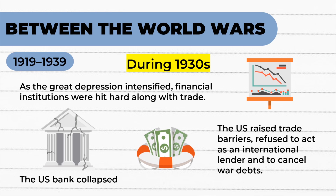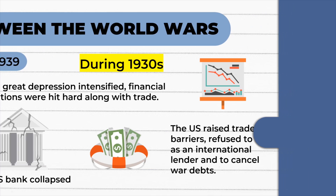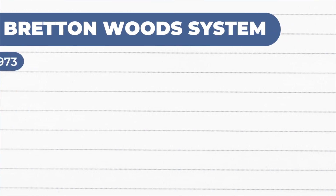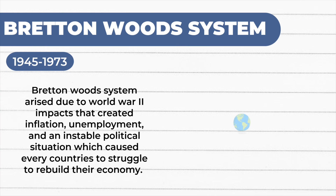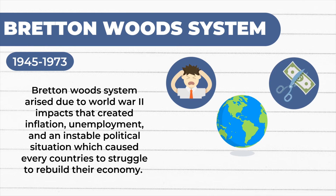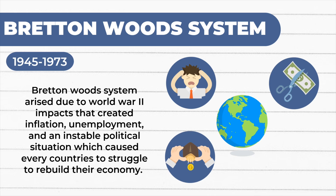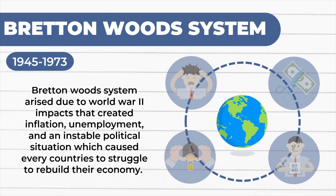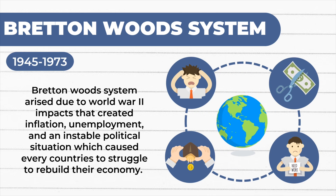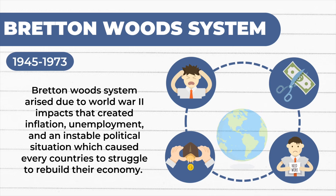During the 1930s, the US raised trade barriers and refused to act as an international lender of last resort. Number 4: The Bretton Woods system. The Bretton Woods system arose due to World War II impacts that created inflation, unemployment, and an unstable political situation, which caused every country to struggle to rebuild their economy.